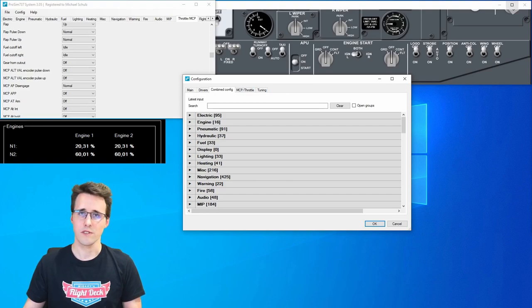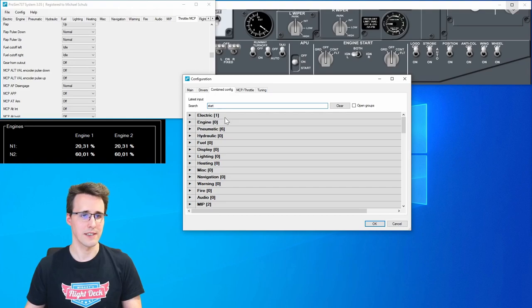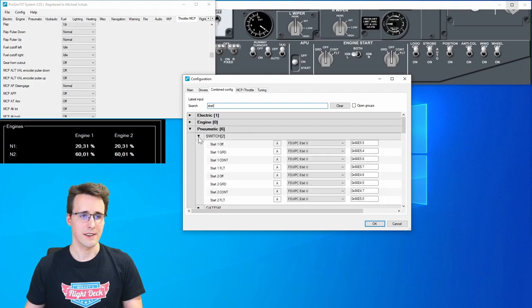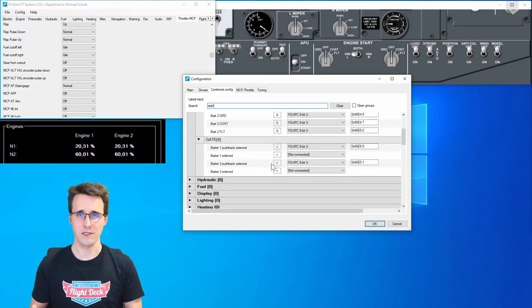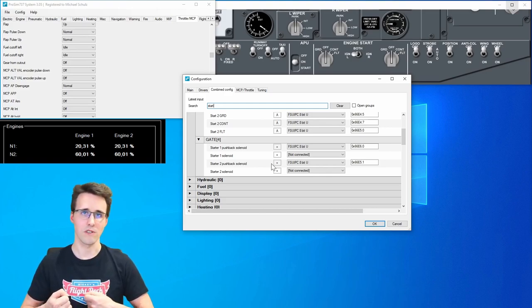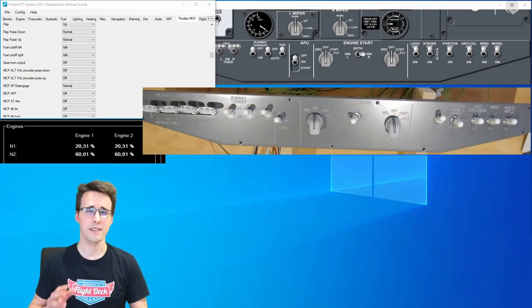Other things can be found in the pneumatic section. And when you search for these things just use the search option here and type in start. And then you can see there are only some results left. And here in the pneumatic section you find under switch the two start switches with all their positions. And under gate you find everything concerning the solenoids which are holding or pushing back the start switches. In my case I use this pushback solenoid. I will come to this later here. Just for you now to know that I'm using this pushback solenoid here.